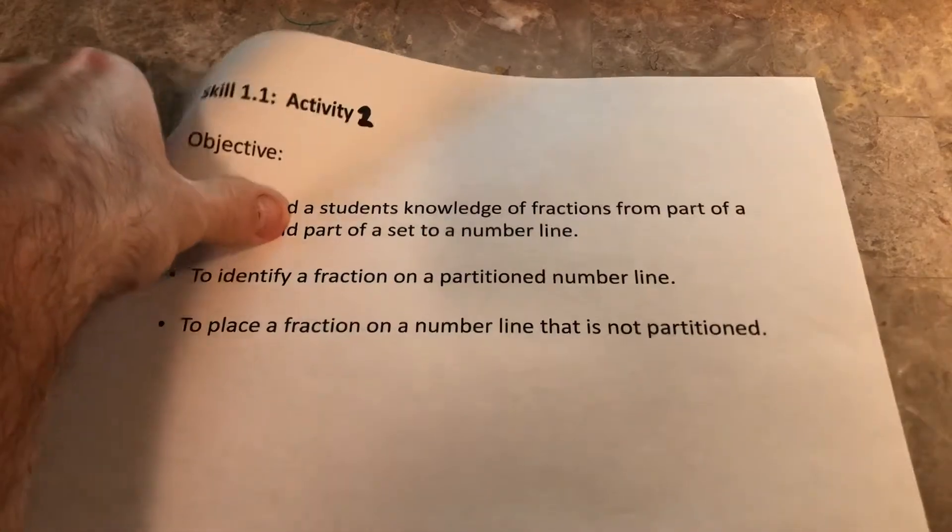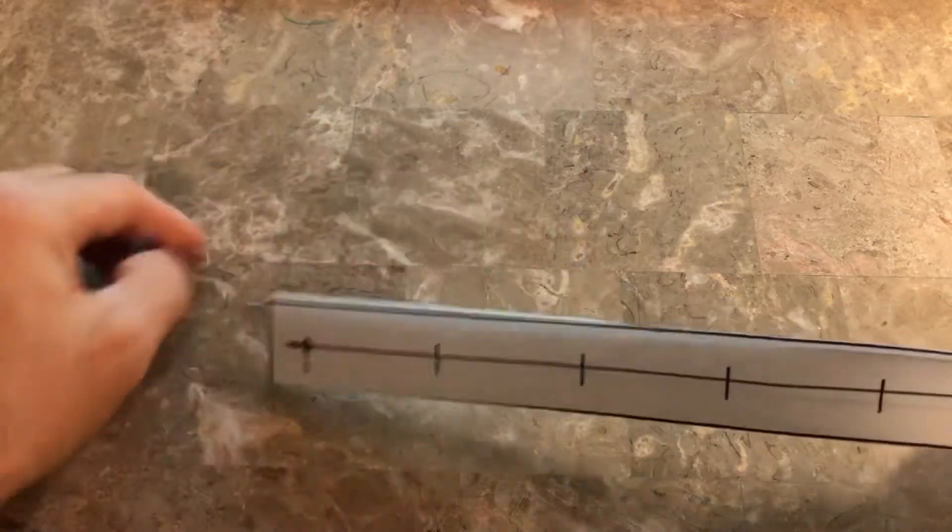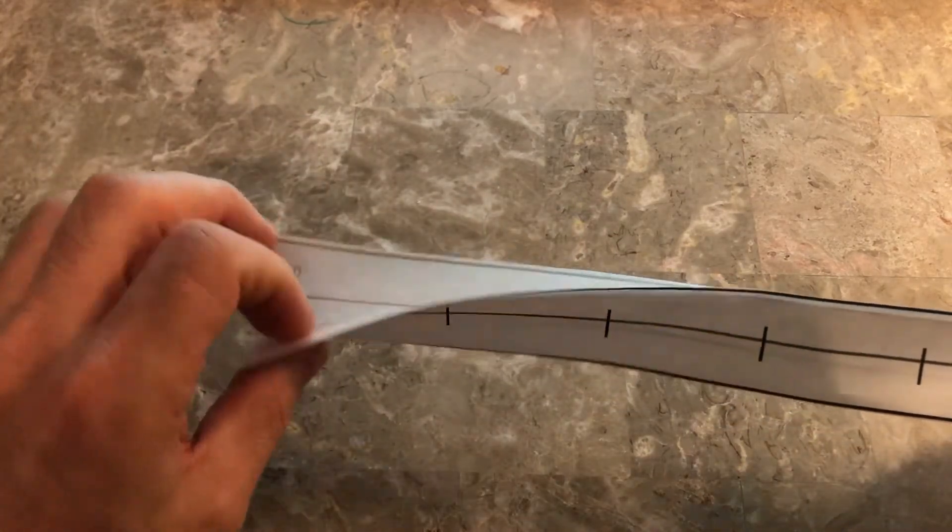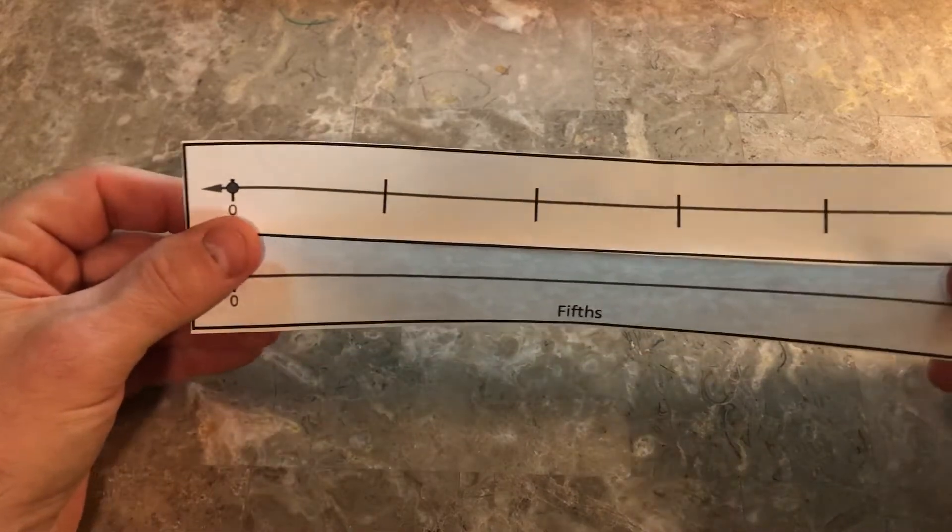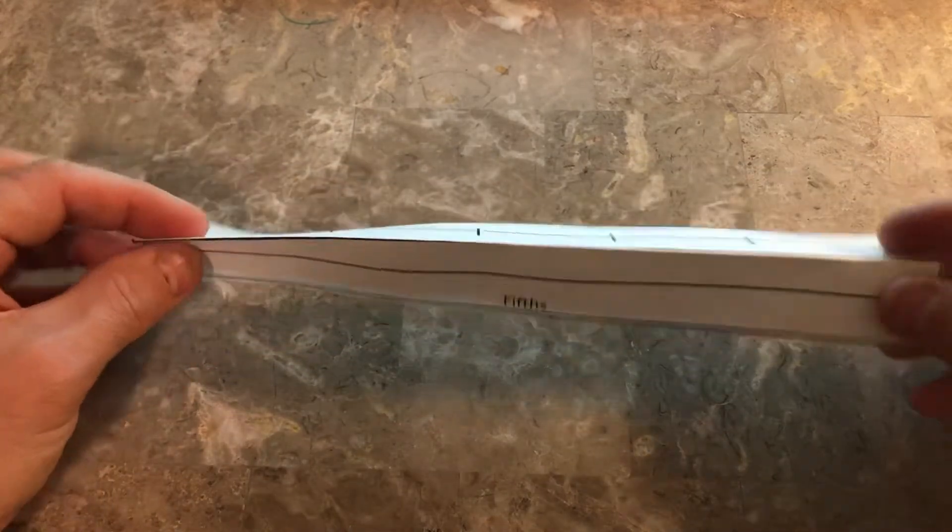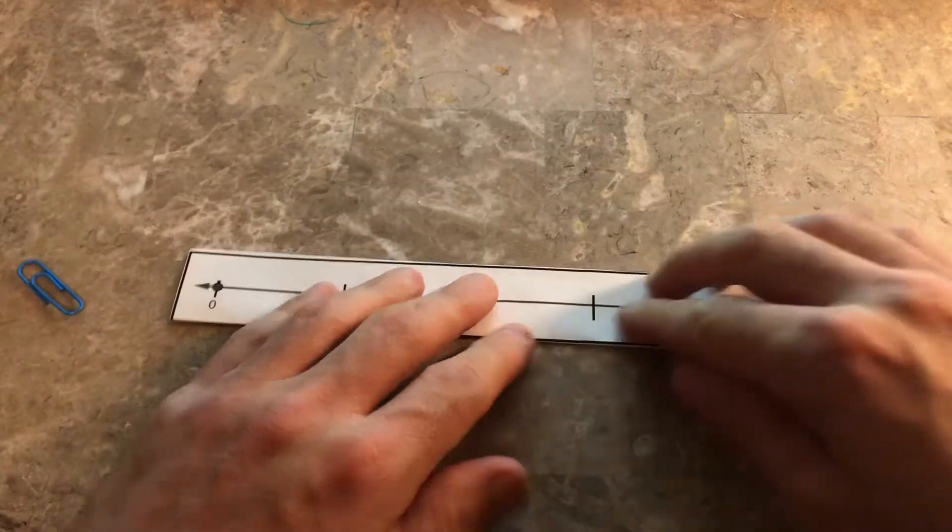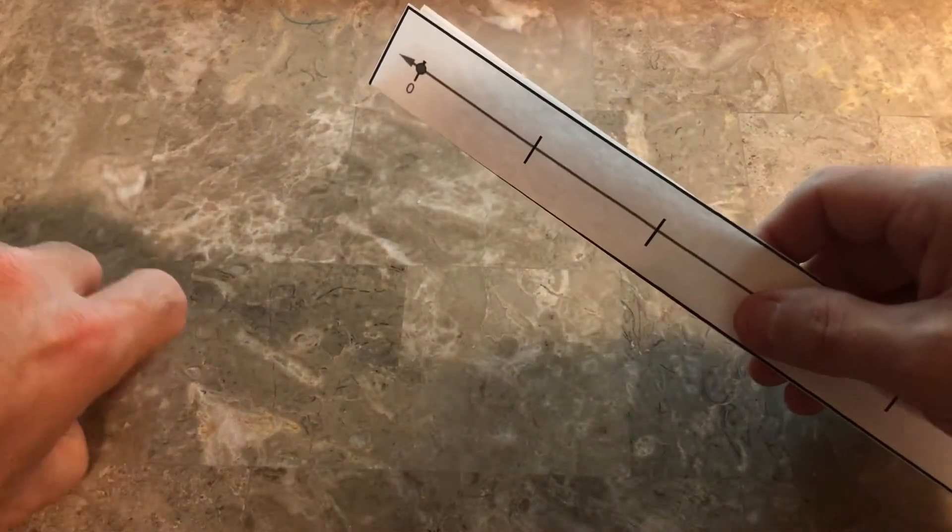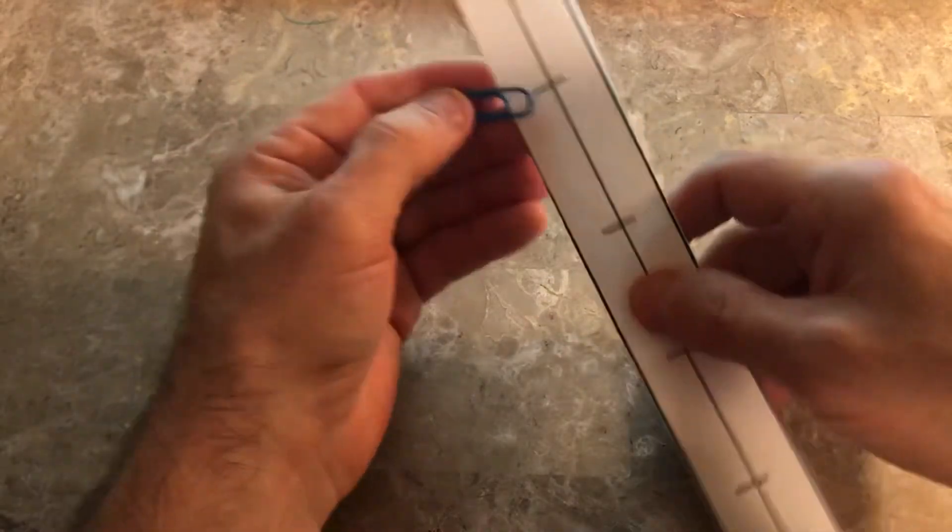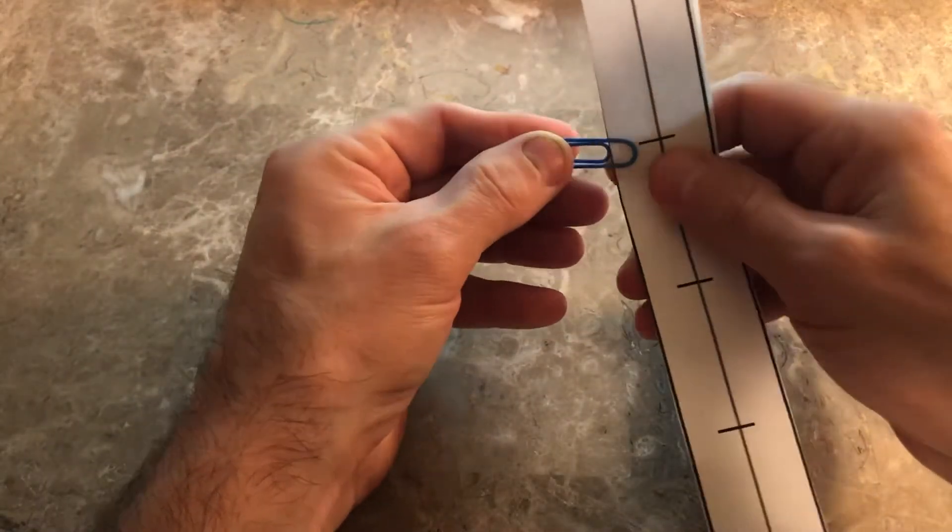When you look at your materials, there will be number lines that look like this. You cut them out, and it'll say 'fifths.' One will have the partitions on it, one will not. You fold it and put a paper clip on it. This can be done in a small group with you leading, or students could have their own number line and work with a partner.